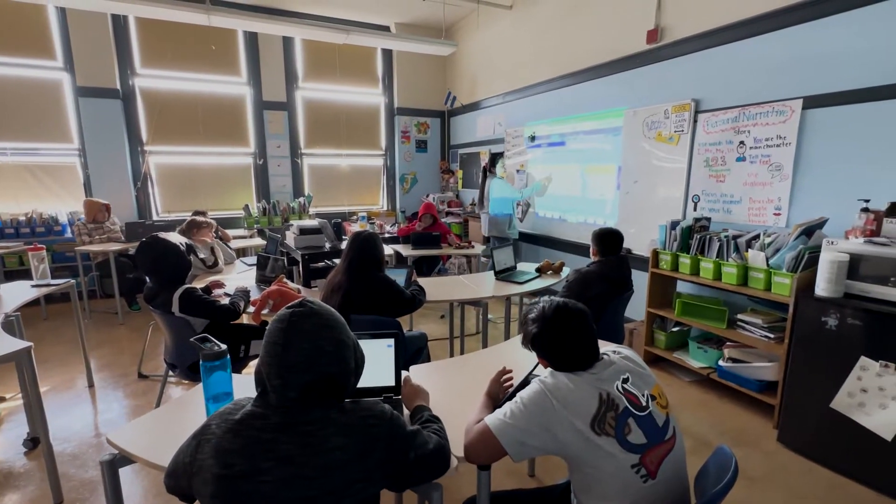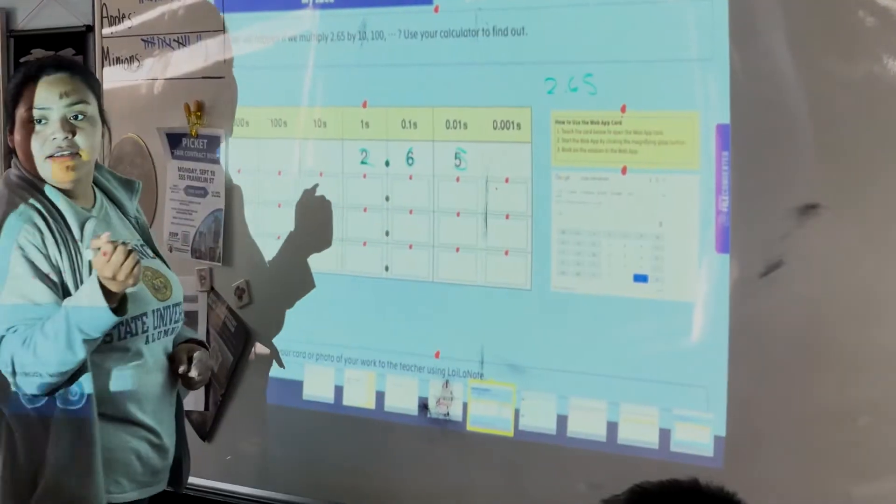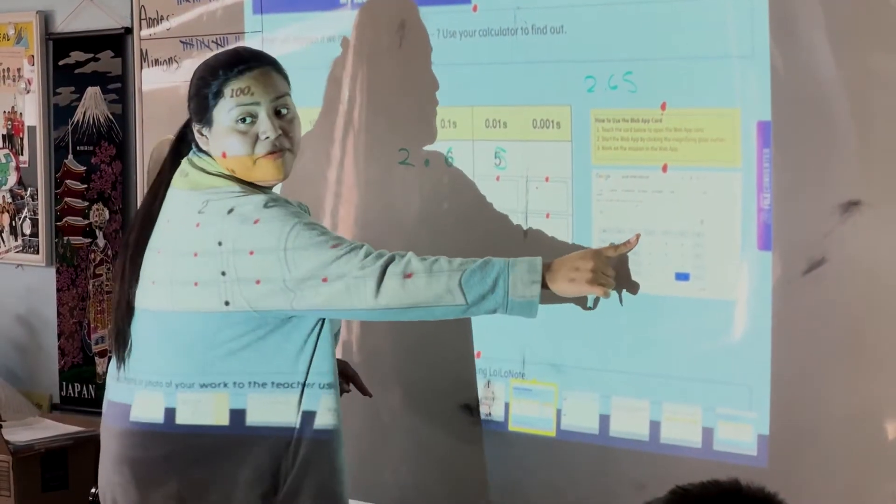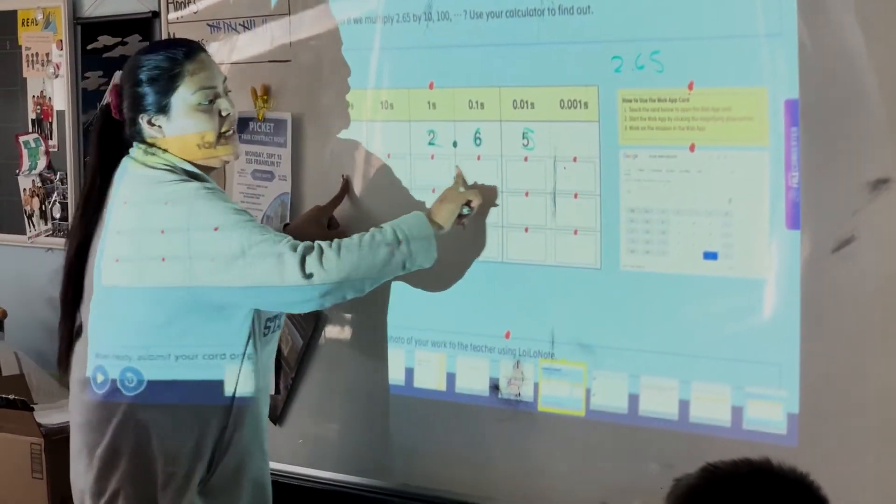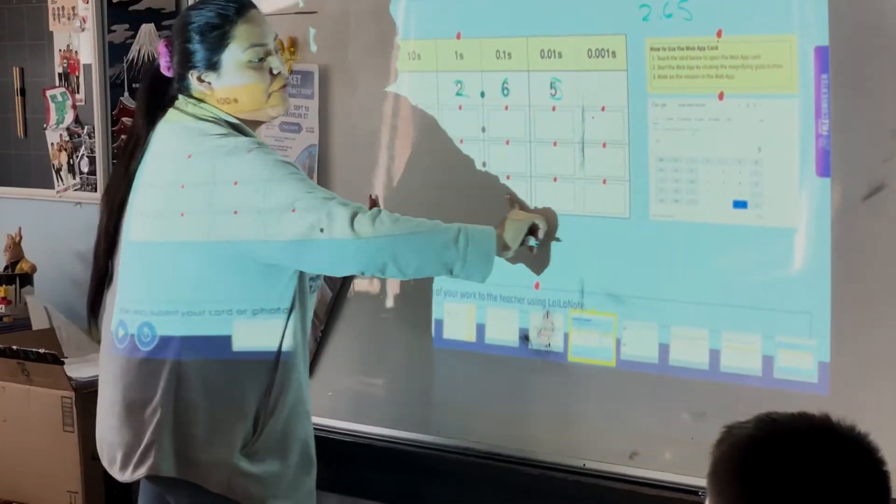Then I go back here and I plug it in. 2.65. So whatever you guys get based off of your calculator, you go and you plug it in here for the tens, then here for the hundreds, and then this last row is for the thousands.